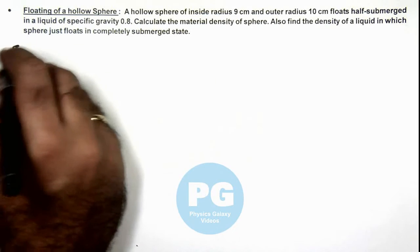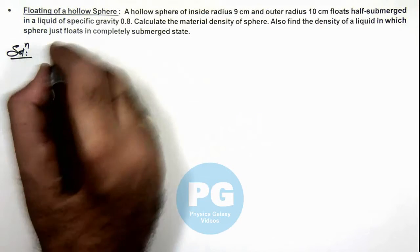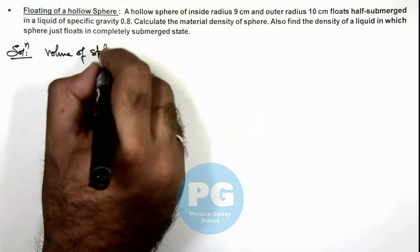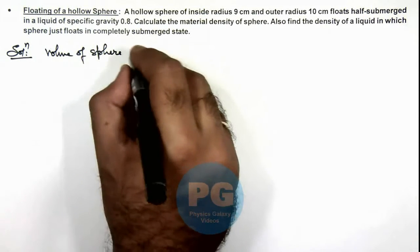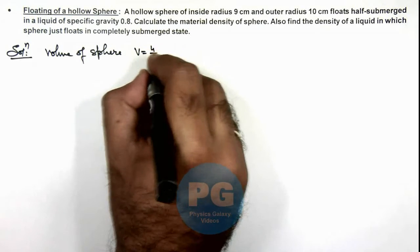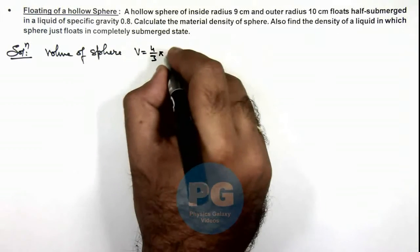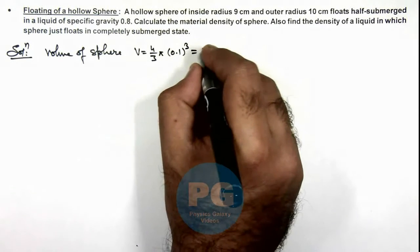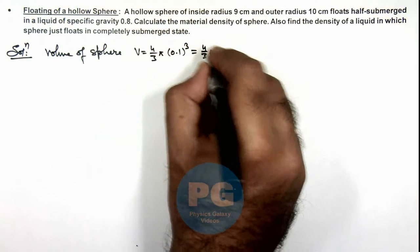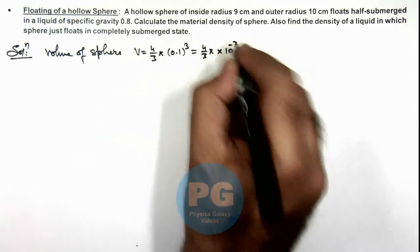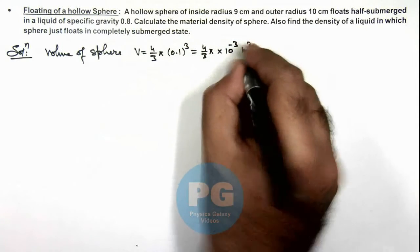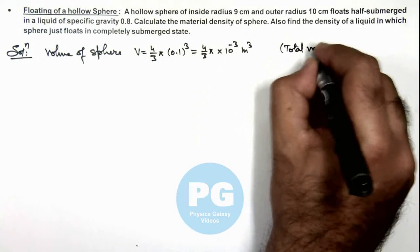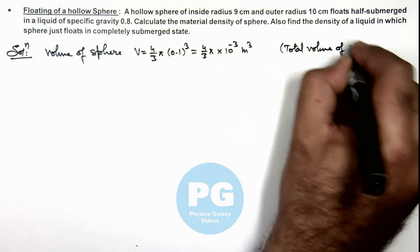We are also required to find the density of a liquid in which it just floats in a completely submerged state. First, we calculate the total volume of the sphere, which is given as 4/3 π times the outer radius 10 centimeter, that is 0.1 cubed, so it is 4/3 π multiplied by 10 to the power minus 3 meter cube. This is the total volume of the sphere.